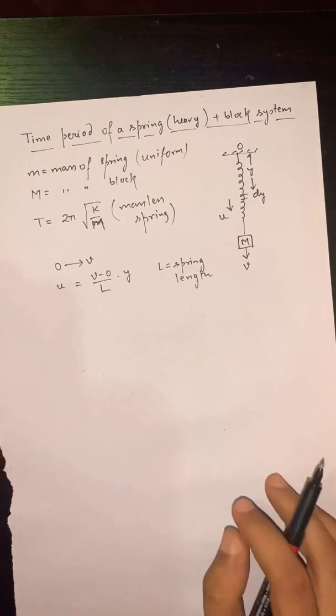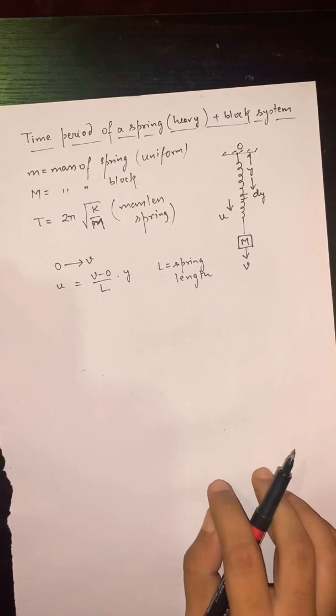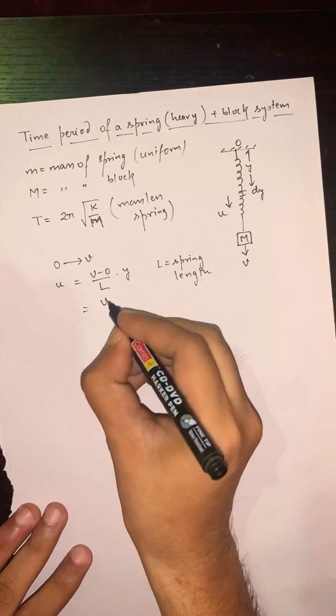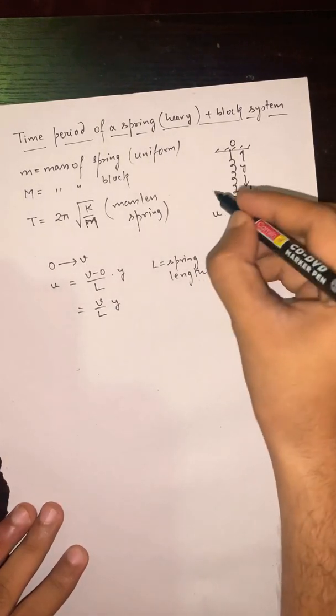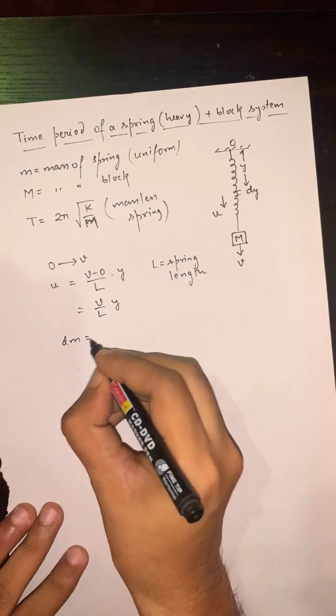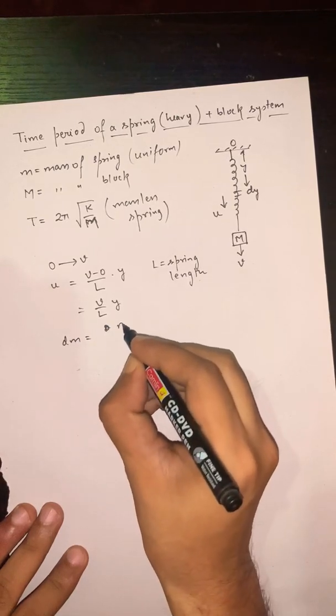Let dm be the mass of that elementary portion which should be equal to m/L × dy. Let us find out the kinetic energy of the whole spring so we can replace it with some effective mass.